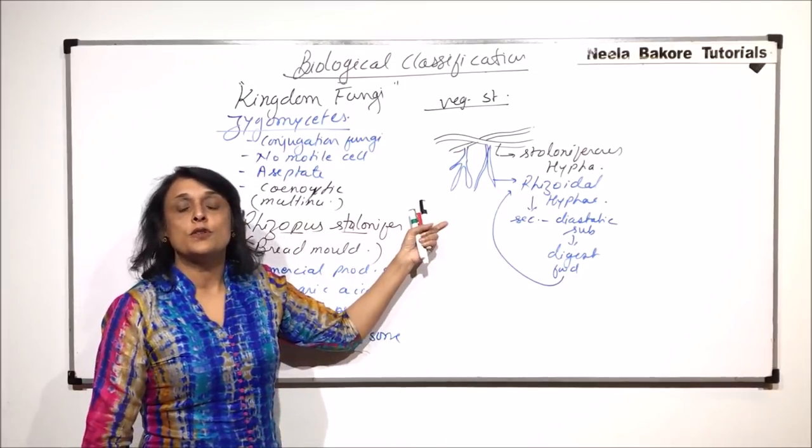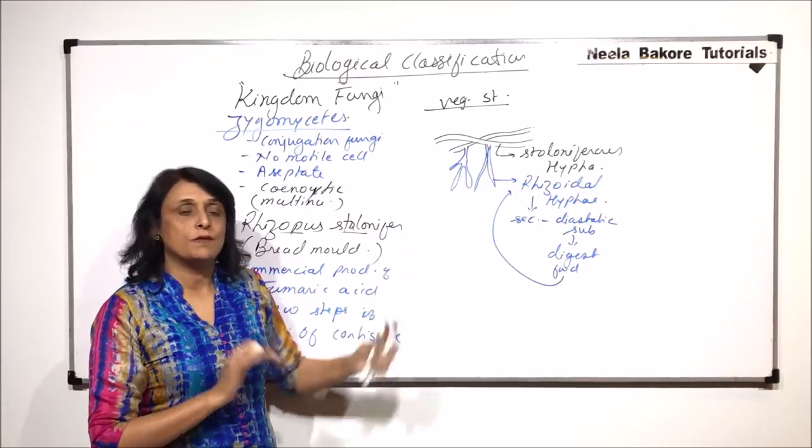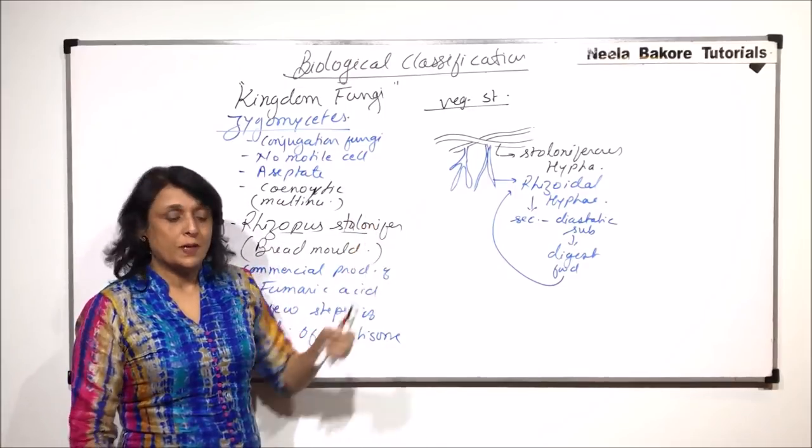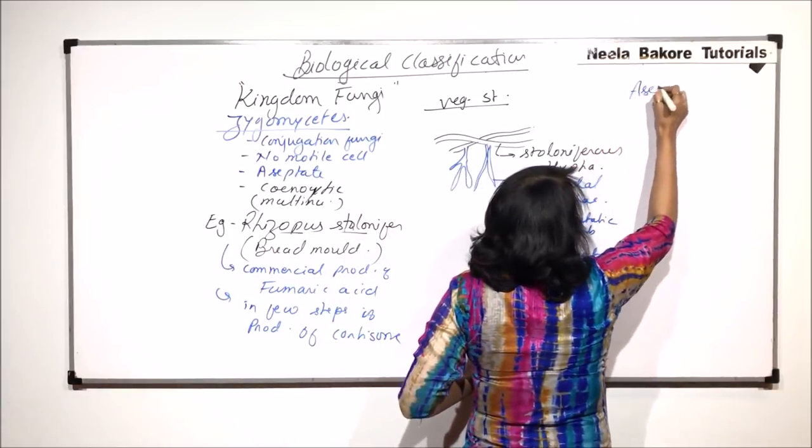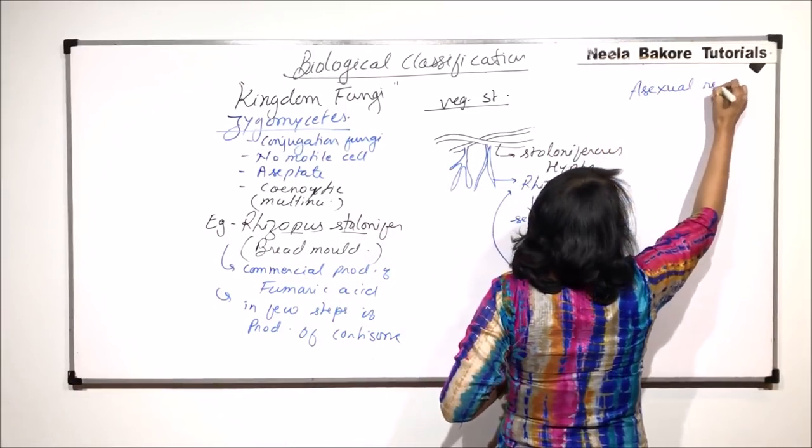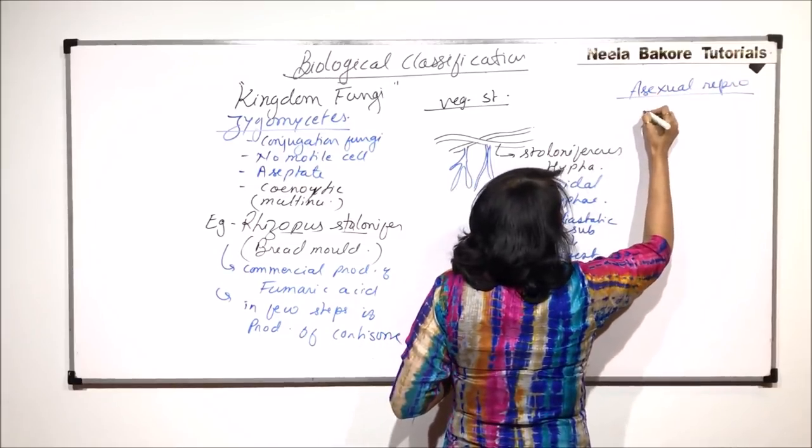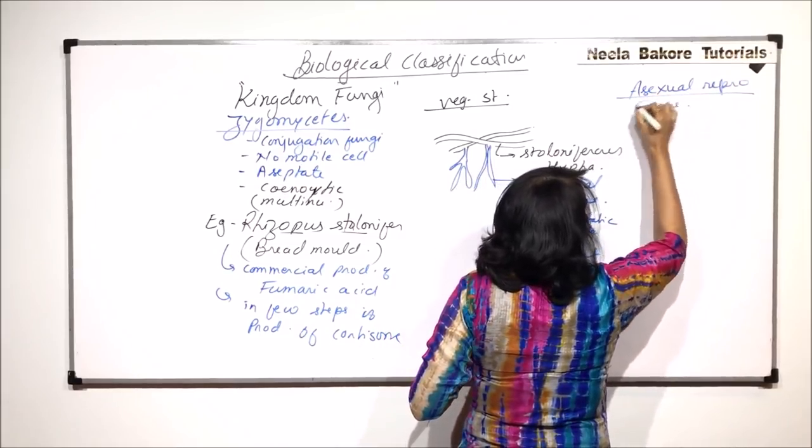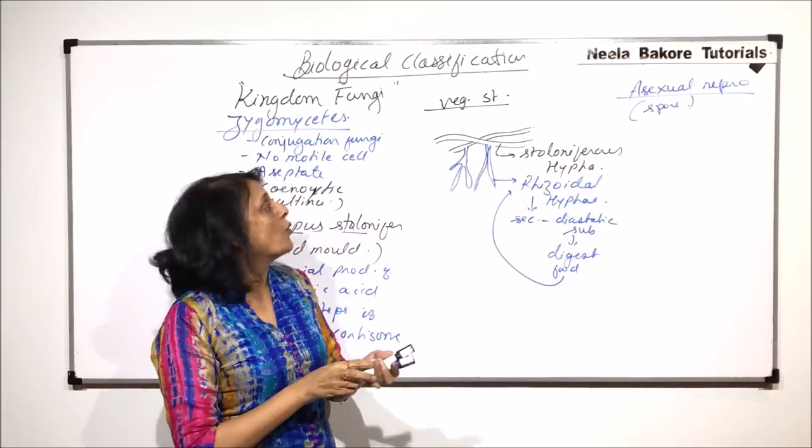This is the structure which is seen during the non-reproductive season. Now, when Rhizopus reproduces asexually, during asexual reproduction which takes place by spore formation, how are these spores formed and where are these spores formed?